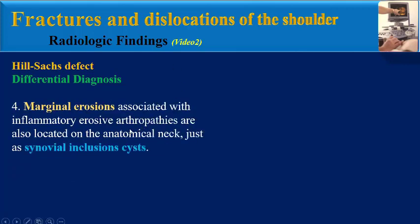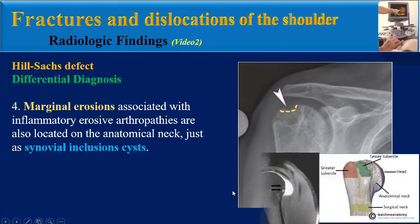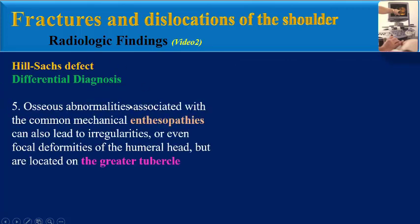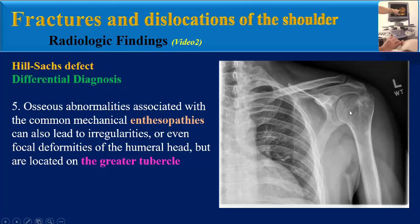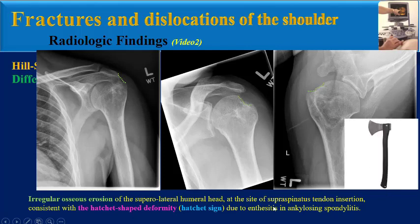Another differential diagnosis is marginal erosions associated with inflammatory erosive arthropathy, also located on the anatomical neck just as synovial inclusion cysts. Osseous abnormalities associated with common mechanical arthropathy can also lead to irregularities or even focal deformities of the humeral head, but are located on the greater tubercle. This is an example of irregular osseous erosion of the superolateral humeral head at the site of supraspinatus tendon insertion, consistent with hatchet shape deformity due to ankylosing spondylitis.